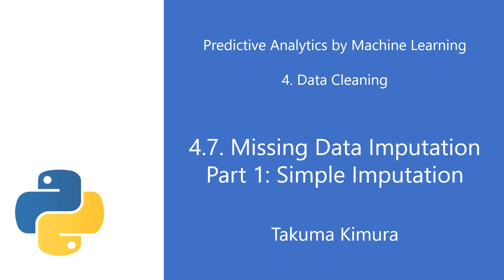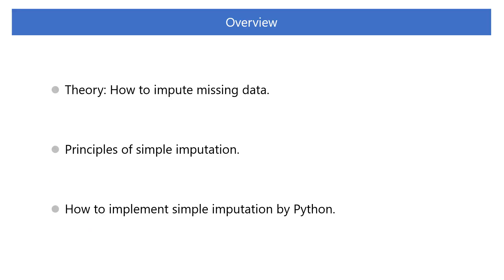Chapter 4, Section 7: Missing Data Imputation, Part 1 — Simple Imputation. In the previous section, we learned how to delete missing data. However, as I mentioned earlier, deleting data is a last resort. In order to preserve as much of the information in the dataset as possible, it is preferable to impute missing data with estimated values. This section will explain the simple imputation method for completing missing data and how to do it in Python.